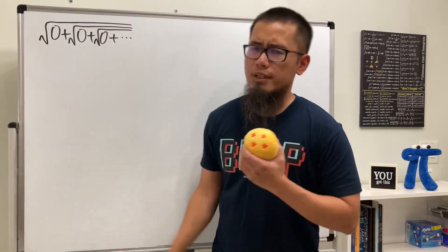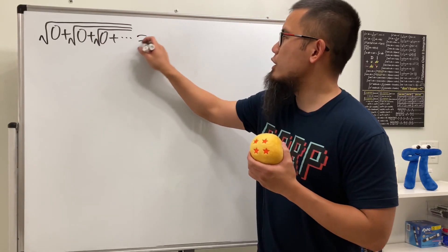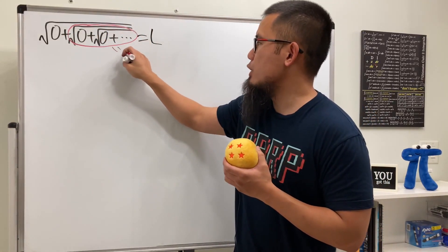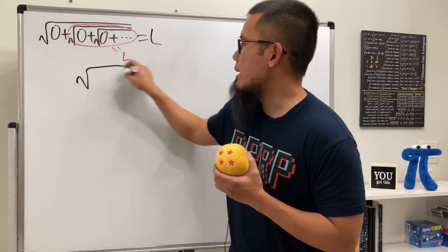Okay, a lot of people did the following for this question. So let's take a look right here. They said that this is equal to L, and as you can see, this right here is the same as the original. So we can make this equal to L as well, and then this right here becomes the square root of zero plus L.